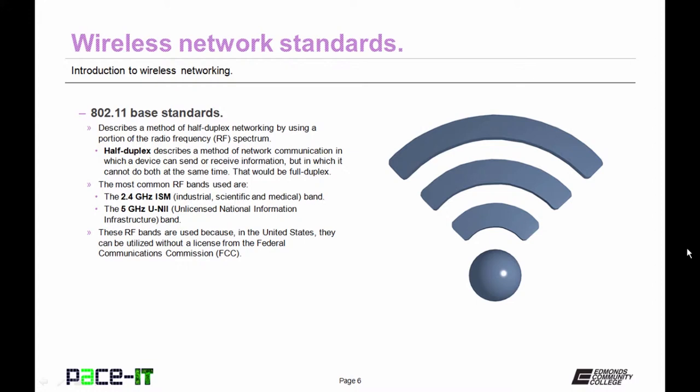Half-duplex describes a method of network communication in which a device can send or receive information, but it cannot do both at the same time. If it could, that would be full-duplex networking, and that wouldn't work in this situation. The most common RF bands used are the 2.4 GHz ISM band and the 5 GHz UNII band. In the United States, these can be utilized without a license from the FCC. If you try to use any other bands, you need to get a license from the FCC, which gets a little cumbersome.